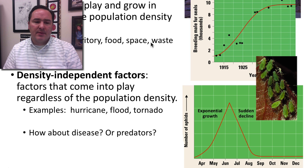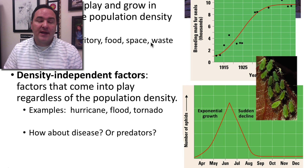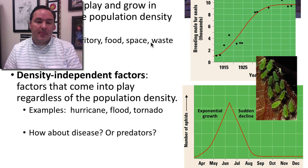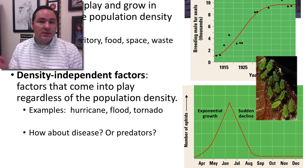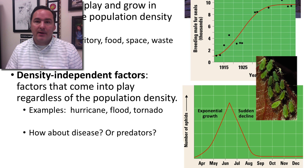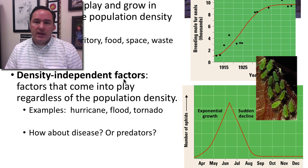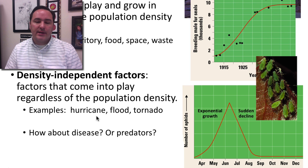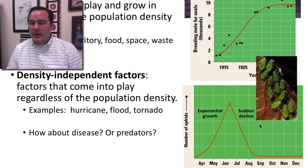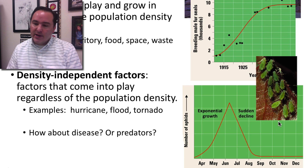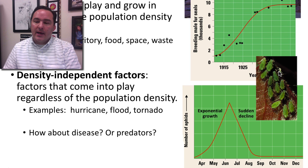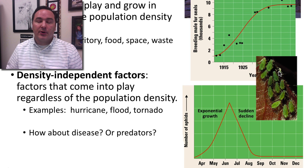The other kind of limiting factor is called a density-independent factor. This is a factor that comes into play regardless of the population density — it doesn't matter how big or how small the population is. They influence the size of the population independent of how big it is. Examples could be hurricanes, floods, tornadoes, or in this example over here — these are aphids.